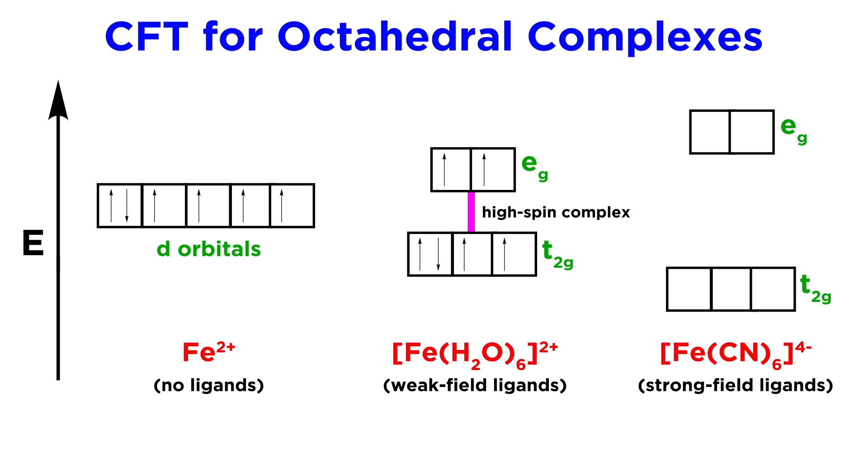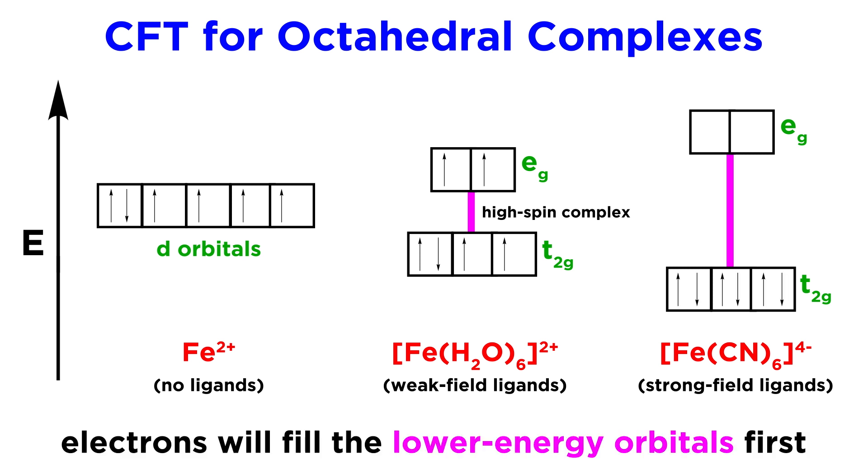But if in a complex with strong field ligands, the difference in energy is very great. In such a case, the system will be at a lower energy by simply doubling up electrons in the lower energy T2G orbitals. These are called low spin complexes.